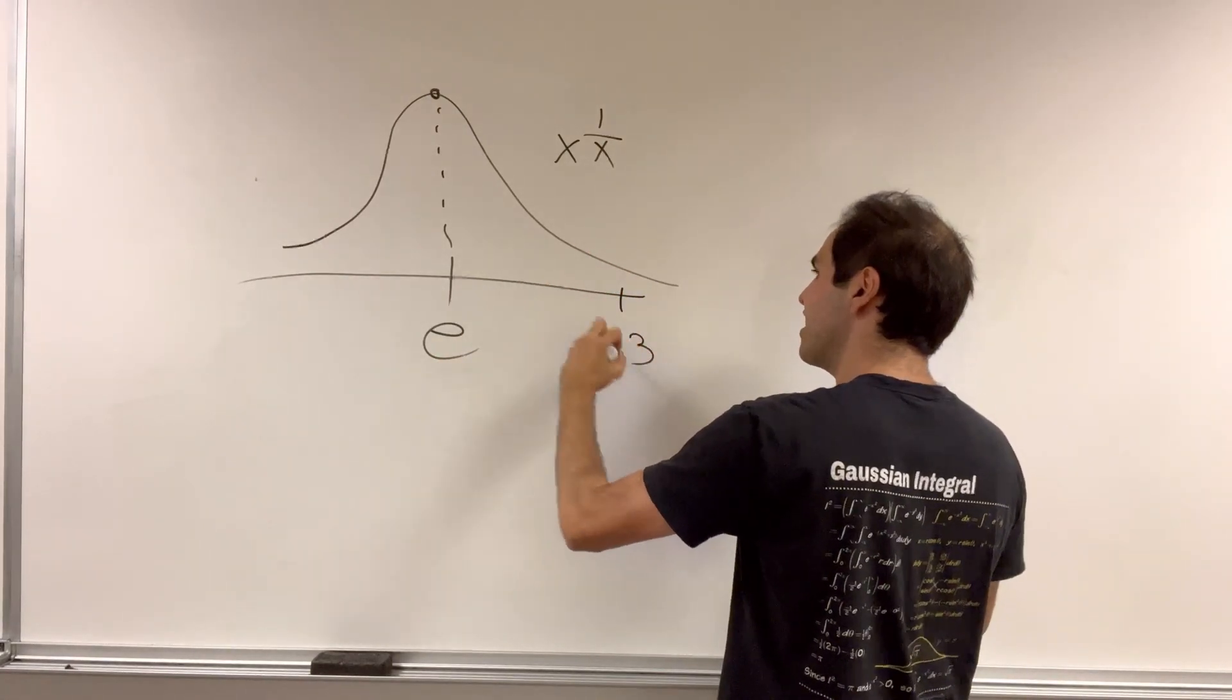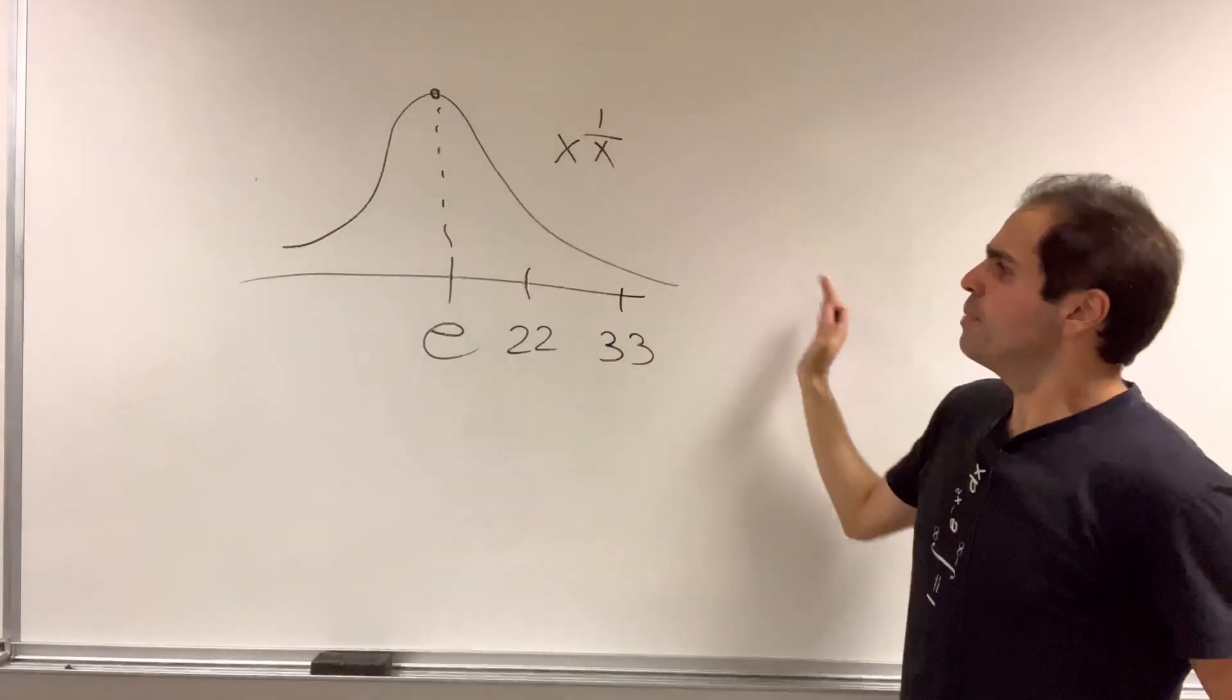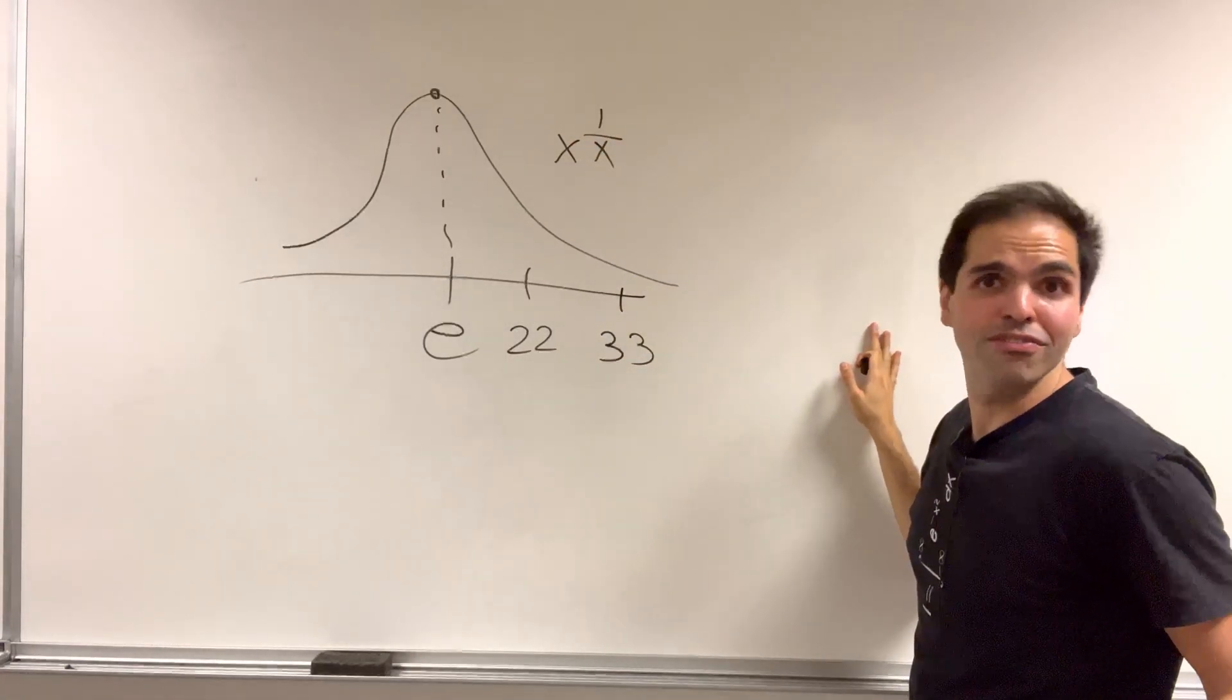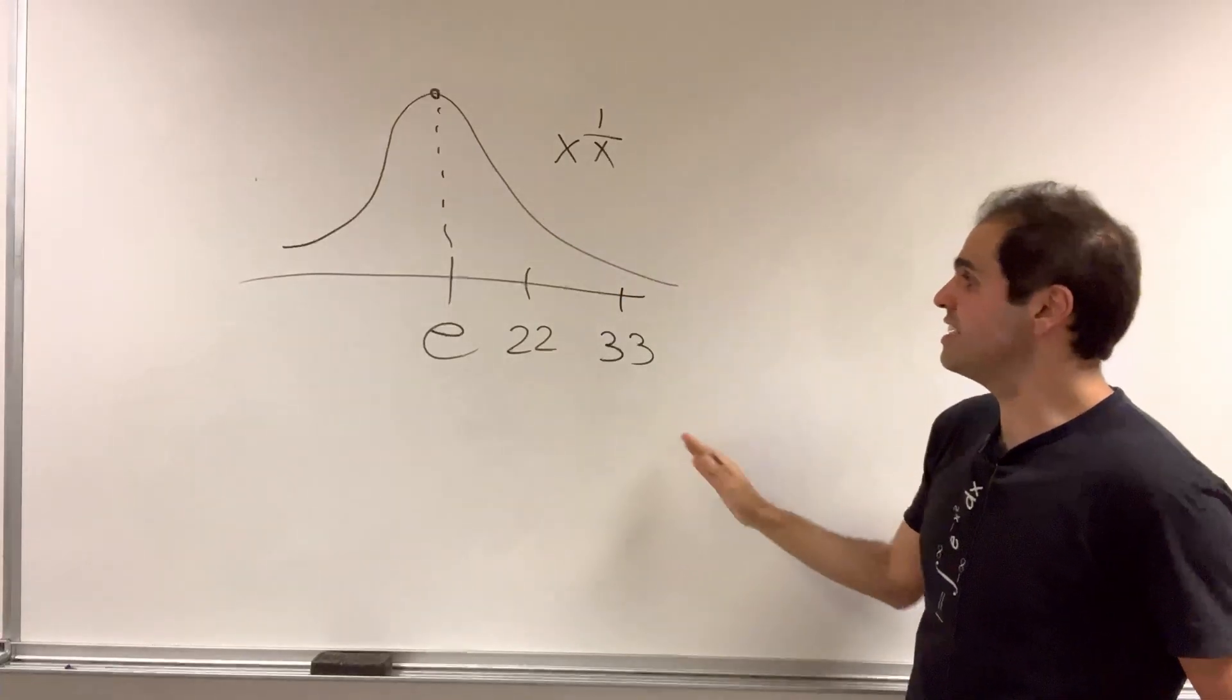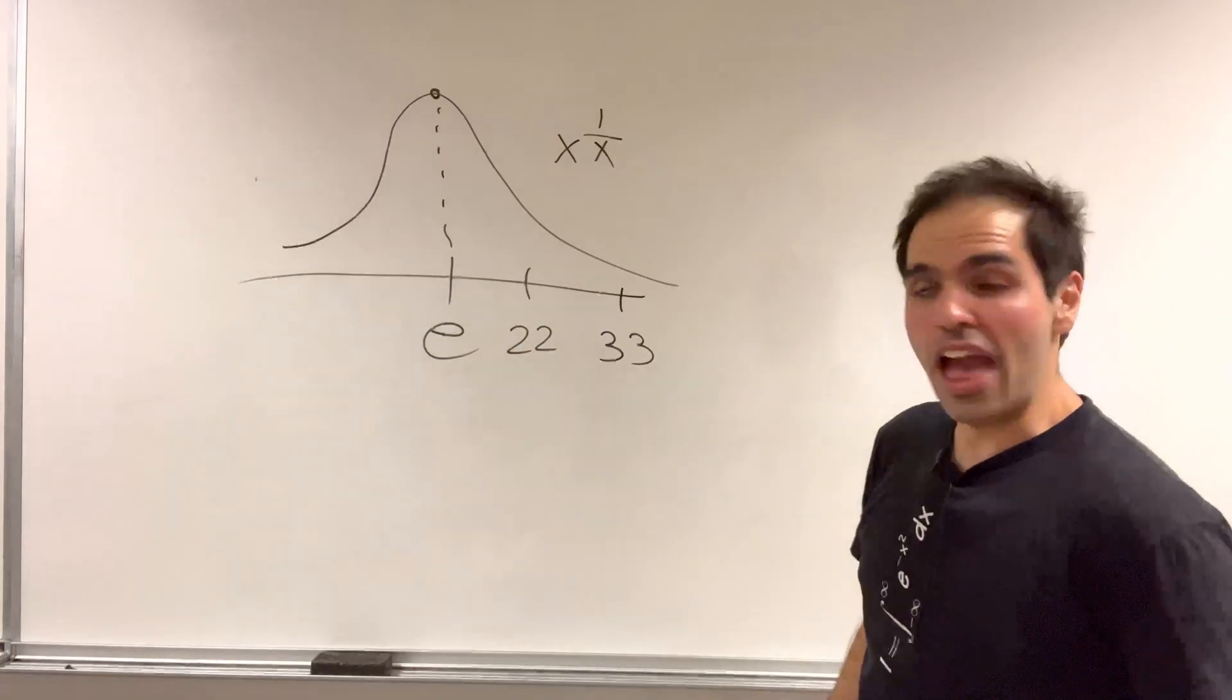So, because the derivative here is negative afterwards, the function is decreasing. So f of 33 is less than f of 22.